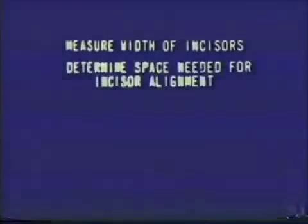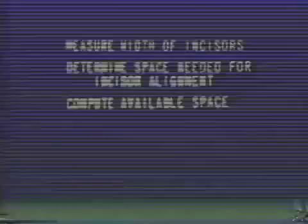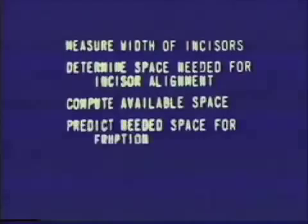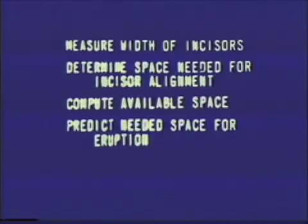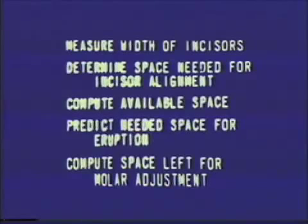Briefly, the analysis involves measuring the width of the lower incisors at their mesial diameter, determining the space needed for incisor alignment in each quadrant, comparing the available space by measuring inside the child's mouth, predicting the needed space for eruption by going to the eruption prediction chart, and computing the space left for molar adjustment or the amount of crowding or spacing in each quadrant.